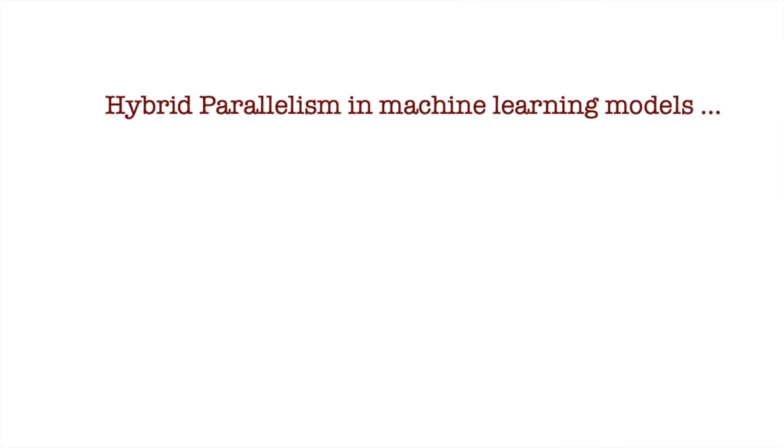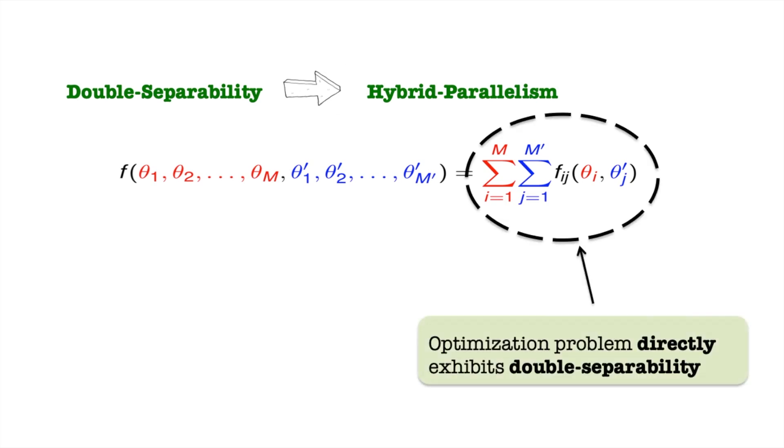So how do we achieve hybrid parallelism in machine learning? It turns out a specific property called double separability naturally leads to hybrid parallelism. If a function in two sets of parameters can be expressed as a double summation of sub-functions, each entirely depending on a pair of parameters from the two sets, then the function is doubly separable. Think of the sub-functions as independent blocks or cells in a matrix, which can be computed independently.